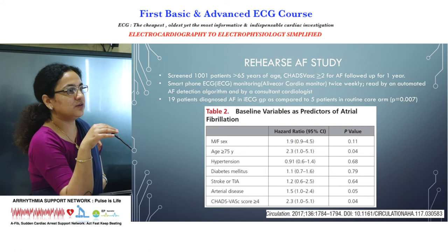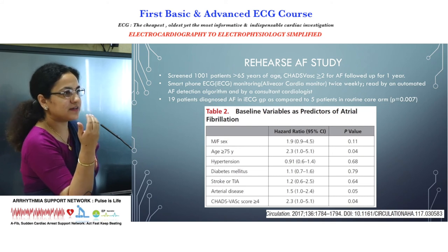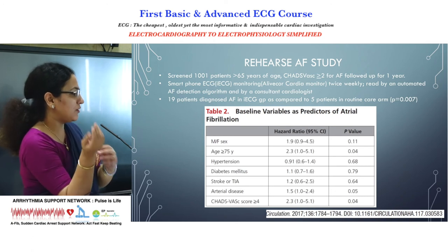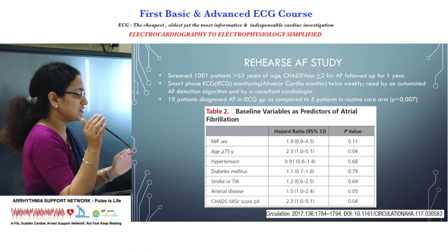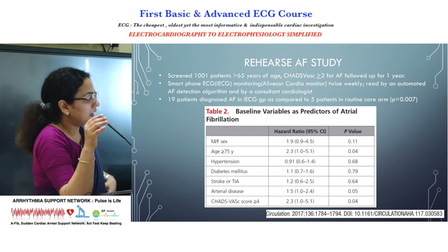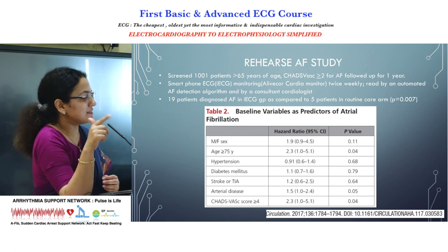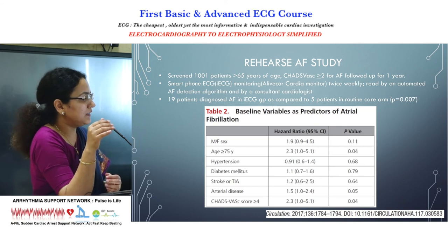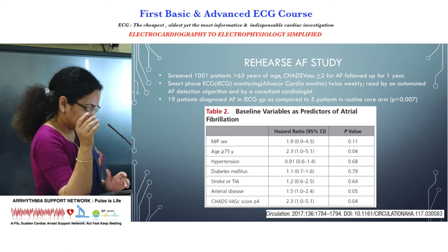A recently published REVERSE AF study in Circulation evaluated patients over 65 years of age with a CHA₂DS₂-VASc score of more than 2, indicating increased risk of atrial fibrillation thrombotic events. They were followed for one year. Surprisingly, 90 patients were diagnosed with AF by electronic ECG compared to only 5 patients on routine care — ECG every one to three months. The p-value was 0.007, and a CHA₂DS₂-VASc score above 4 further increased the risk of developing atrial fibrillation.